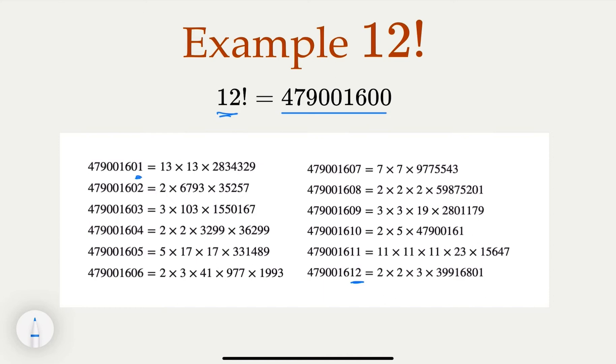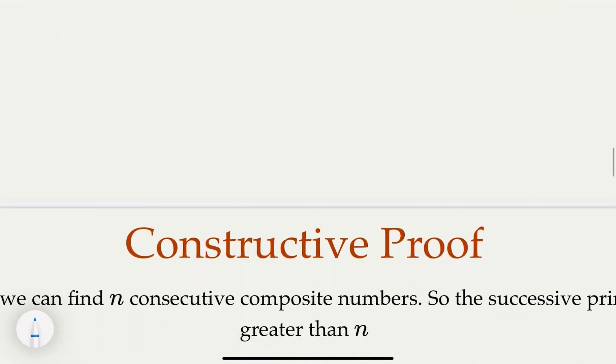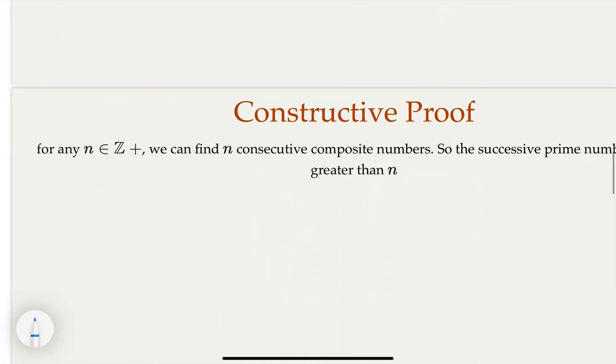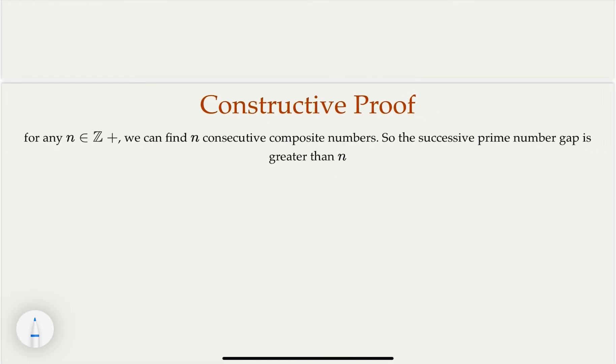What we have shown is a constructive proof that the gap between two prime numbers can be arbitrarily large. For given n, no matter how big, I can construct n consecutive composite numbers. So the gap can be as big as n. That concludes the proof.